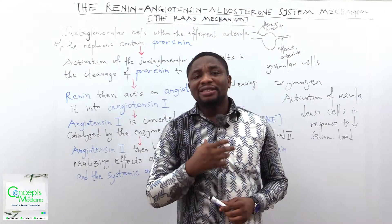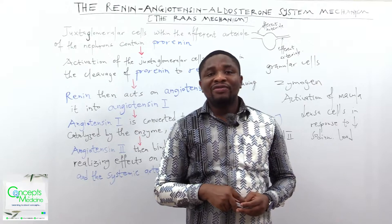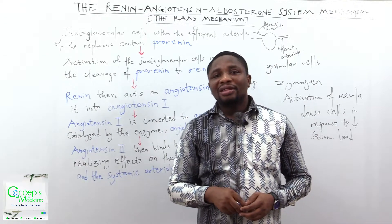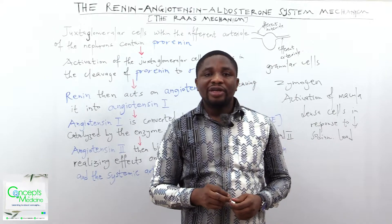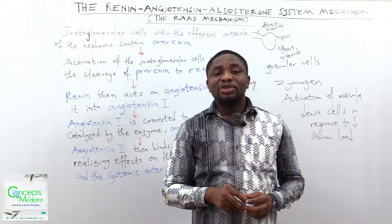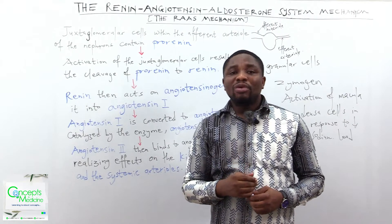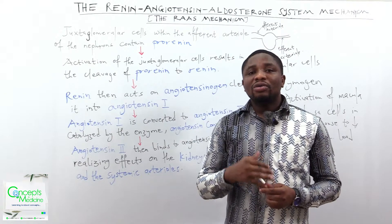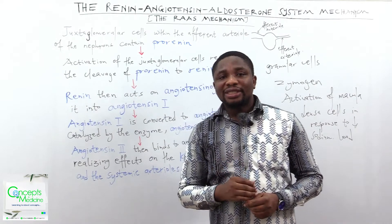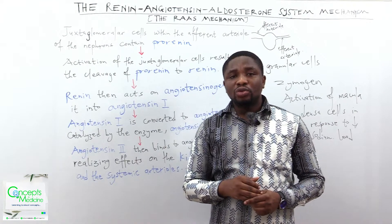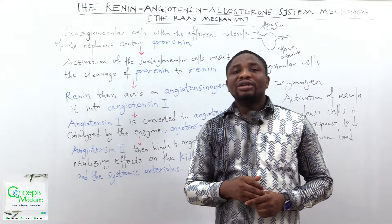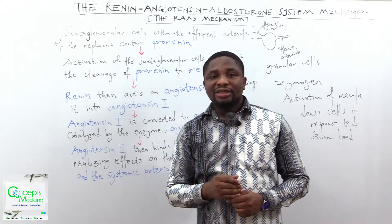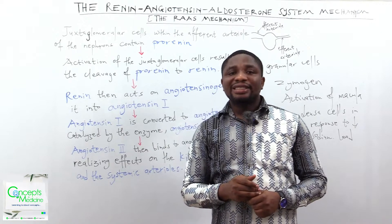The angiotensin-converting enzyme is produced by the vascular endothelium of the lungs majorly, and to some extent that of the kidney. This enzyme, which we call ACE, converts angiotensin-1 into angiotensin-2. Angiotensin-2 then binds to its angiotensin-2 receptors, type 1 and type 2, causing effects on the following structures: the brain, the adrenal glands, the kidneys, and the systemic arterioles.